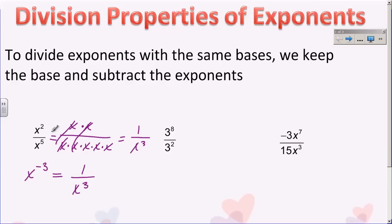The answer to the first one is one over x to the third. You can write it in expanded form or you can subtract exponents. For the next example, three to the eighth over three squared: my base is three, so I keep my base and subtract my exponents. Eight minus two is six. If you want to fully simplify, find what three to the sixth power is — take out your calculator, type in three to the power of six, and you get 729.